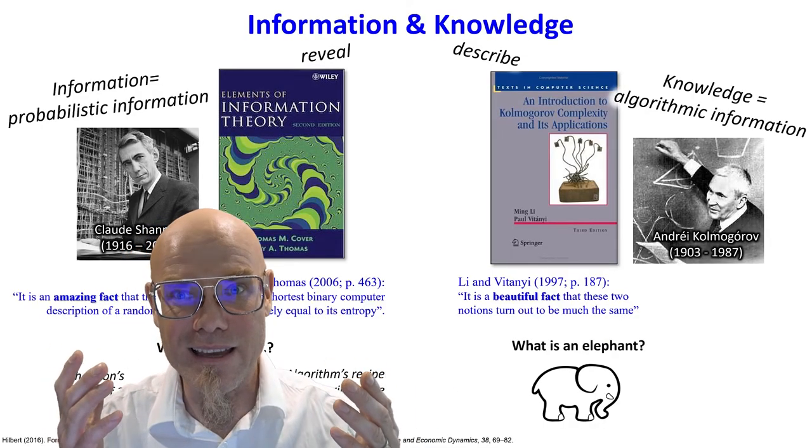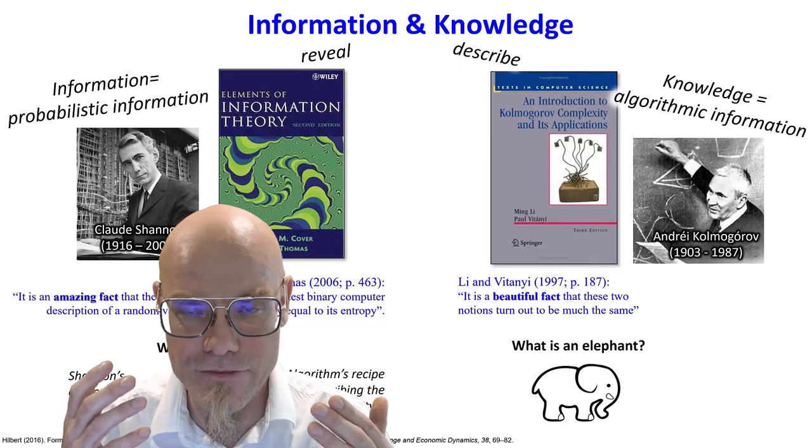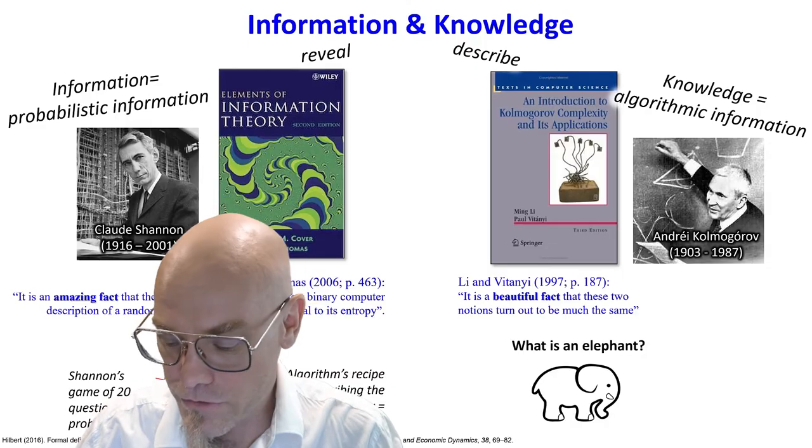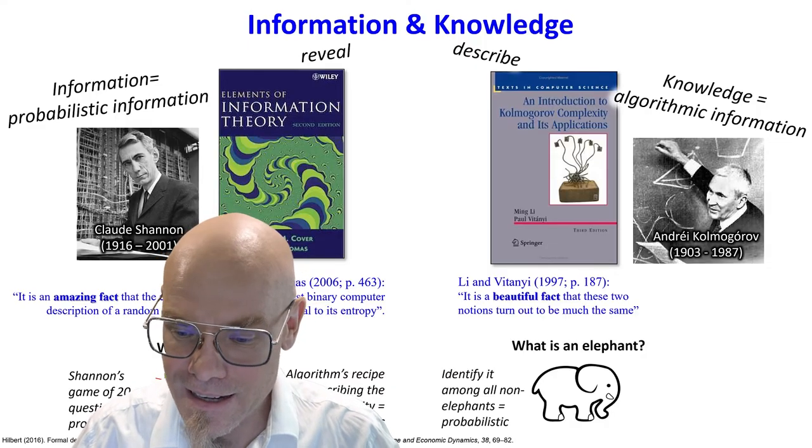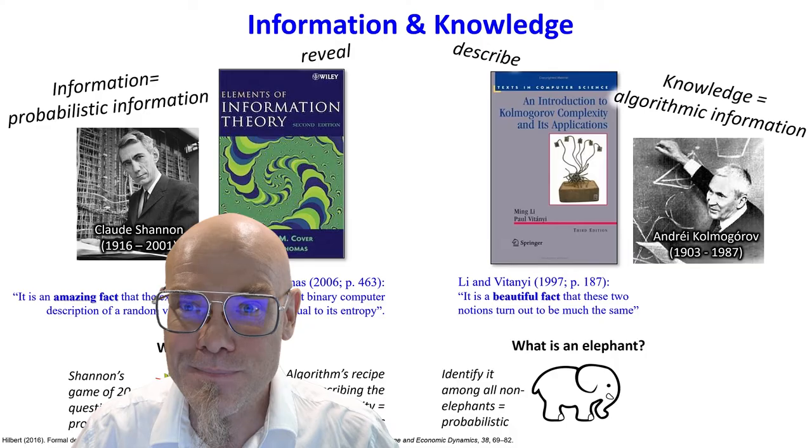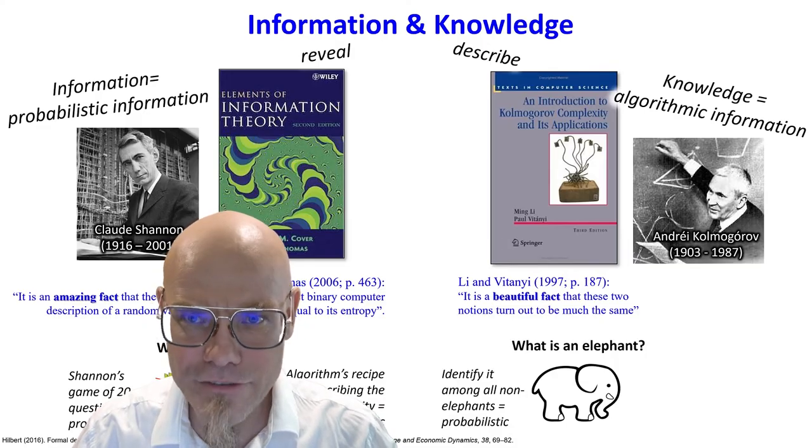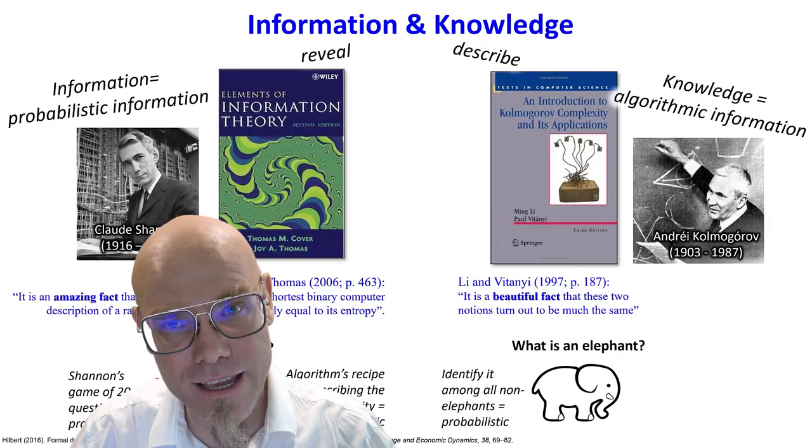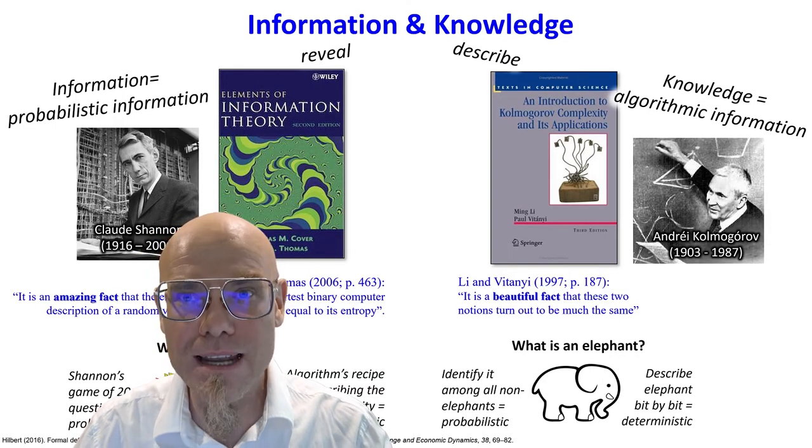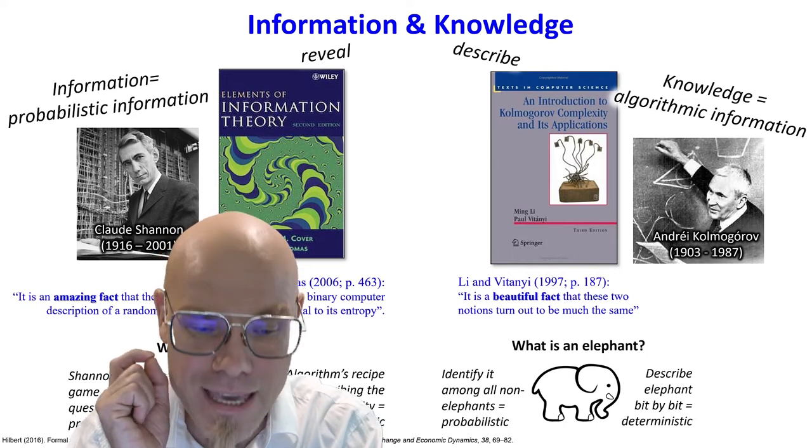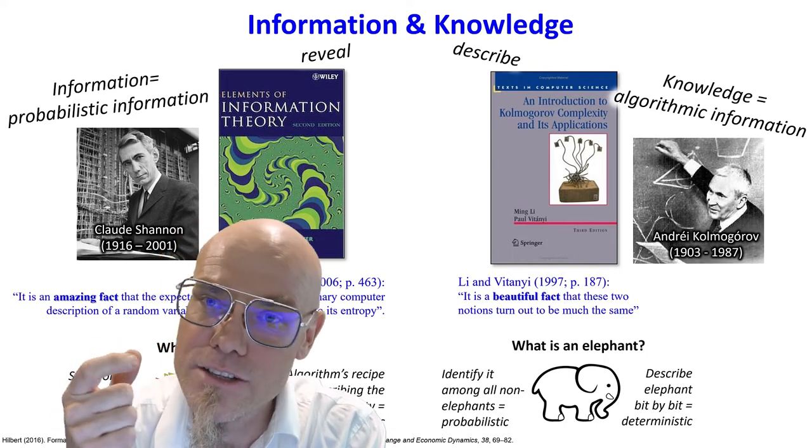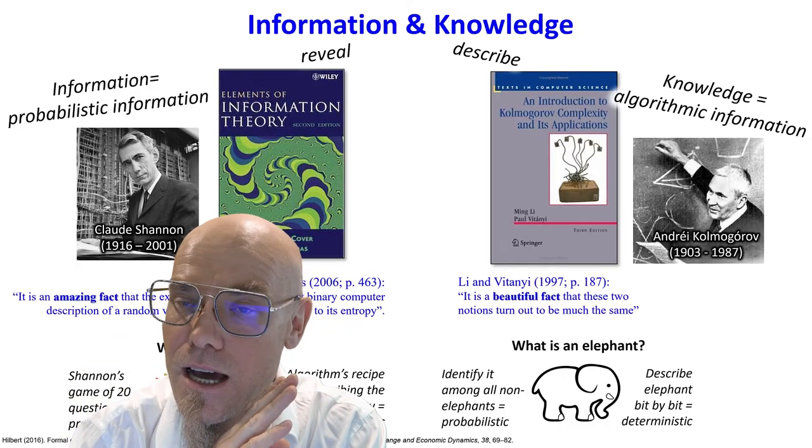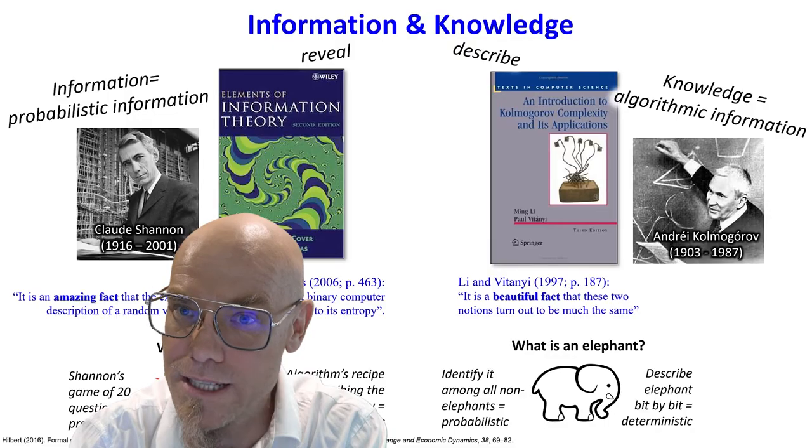So in the words of Cover and Thomas, the authors of the standard textbook in information theory, they say it is an amazing fact that the expected length of the shortest binary computer description of a random variable is approximately equal to its entropy. Entropy is the measure of probabilistic information. And in the words of Li and Vitányi, the authors of the leading textbook on Kolmogorov complexity, they say it's a beautiful fact that these two notions turn out to be much the same. That means that informational bits and knowledge bits on average, you need the same. You can reveal it, or you can describe it.